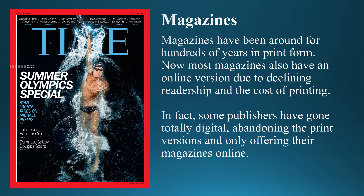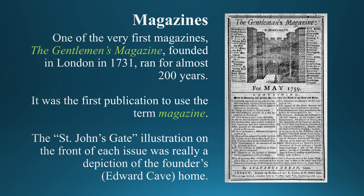Magazines have been around for hundreds of years in print form. Now, most magazines also have an online version due to declining readership and the cost of printing. In fact, some publishers have gone totally digital, abandoning the print versions and only offering their magazines online. Eventually, all magazines will be digital only. One of the very first magazines, the Gentleman's Magazine, founded in London in 1731, ran for almost 200 years. It was the first publication to use the term magazine.